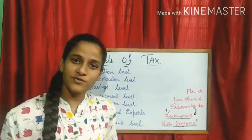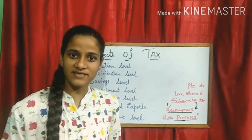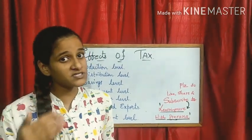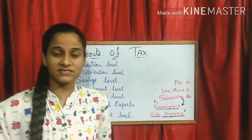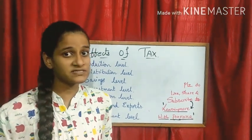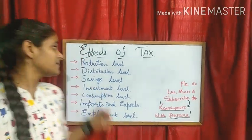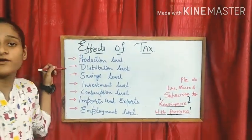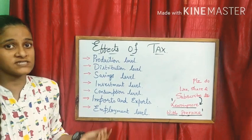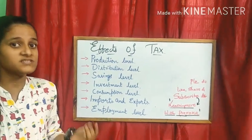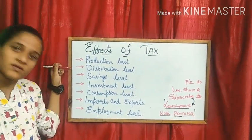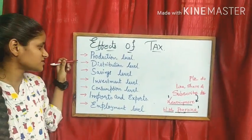Then, distribution. Due to the increase in tax level, the production level will be decreased. If the production level is decreased, people will not get the goods and services which they want. So here we may face the problem of distribution.